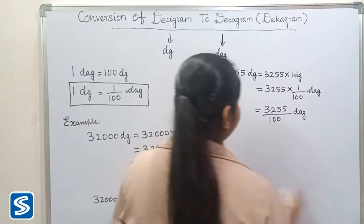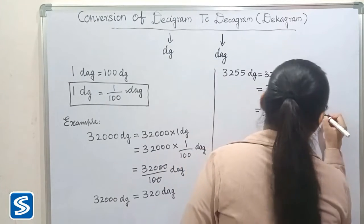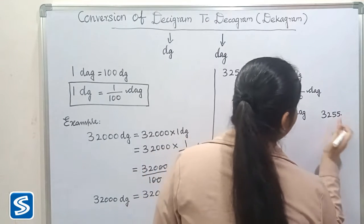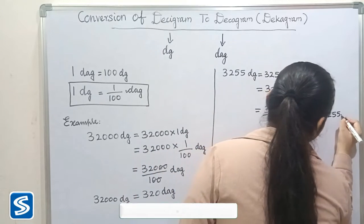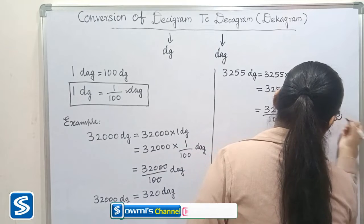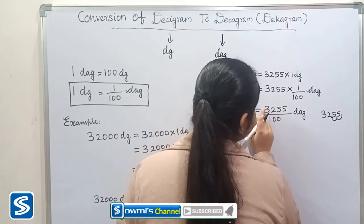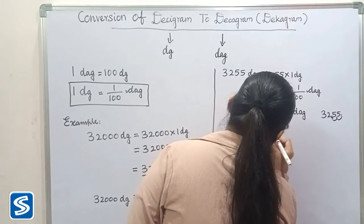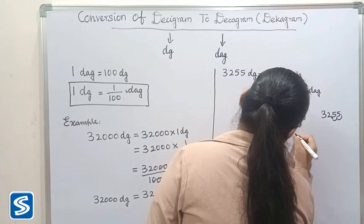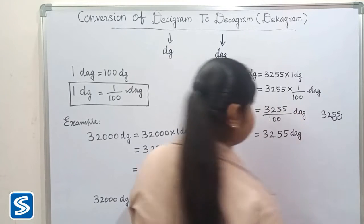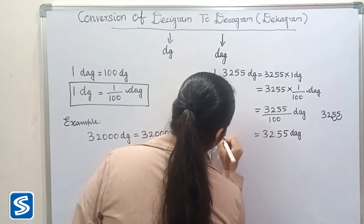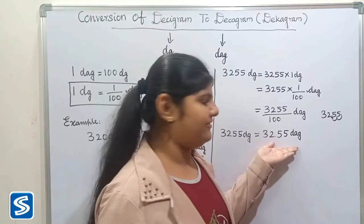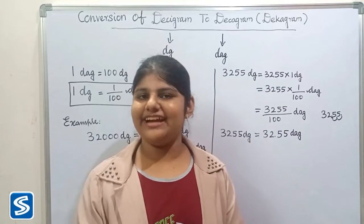The easy way to divide by 100 is to move the decimal point 2 places to the left — 1, 2. So when we divide 3,255 by 100 decagrams, our answer will be 32.55 decagrams. So 3,255 desigrams is equal to 32.55 decagrams. Next we will take another example.